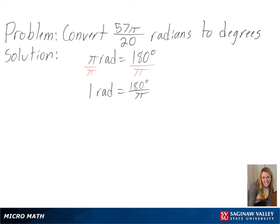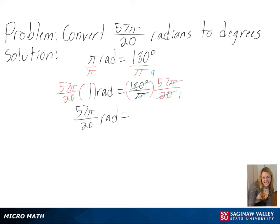Then we can multiply both sides by 57 pi over 20 to convert to 57 pi over 20 radians. After cross canceling our pi's and simplifying, we will get 9 times 57, or 513 degrees, as our final answer.